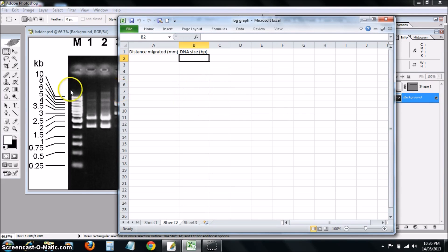The first DNA fragment is 10 kilobases, which equals 10,000 base pairs. The next one is 8 kilobases, which is 8,000 base pairs, and so on.